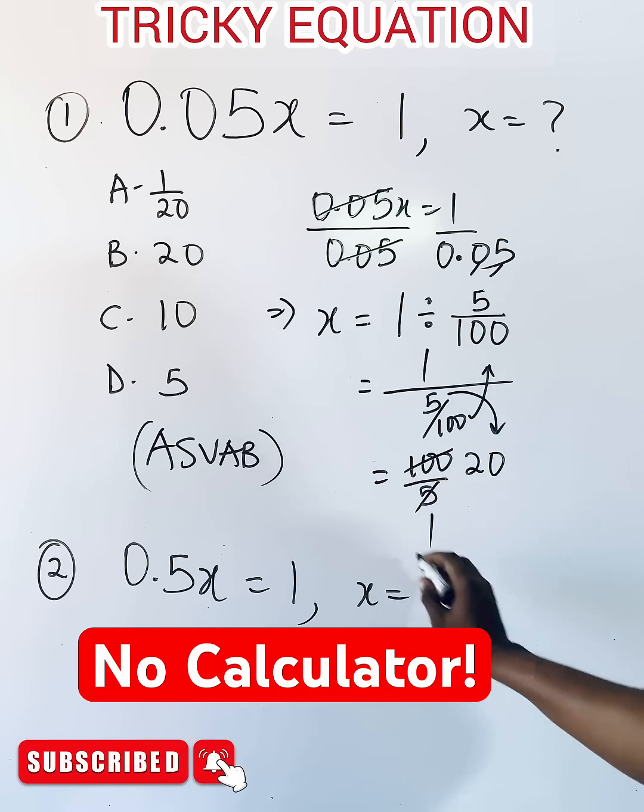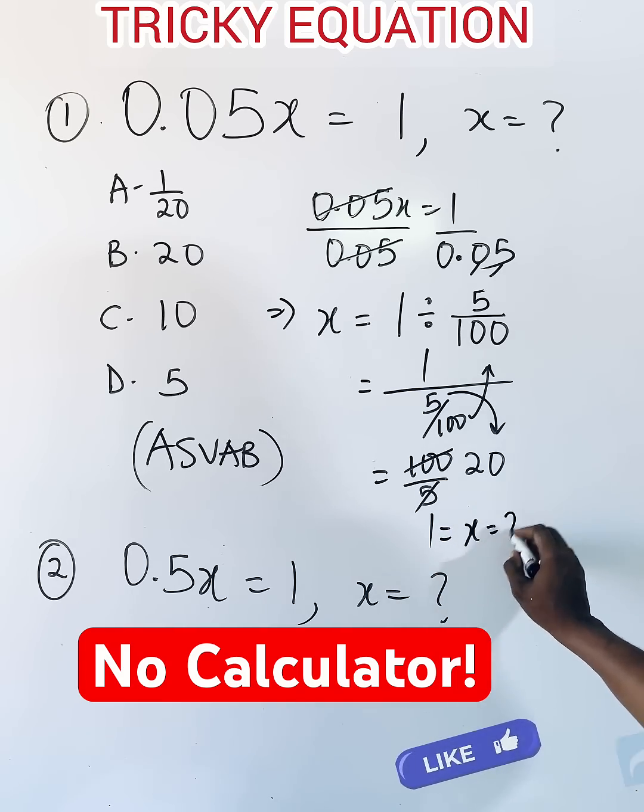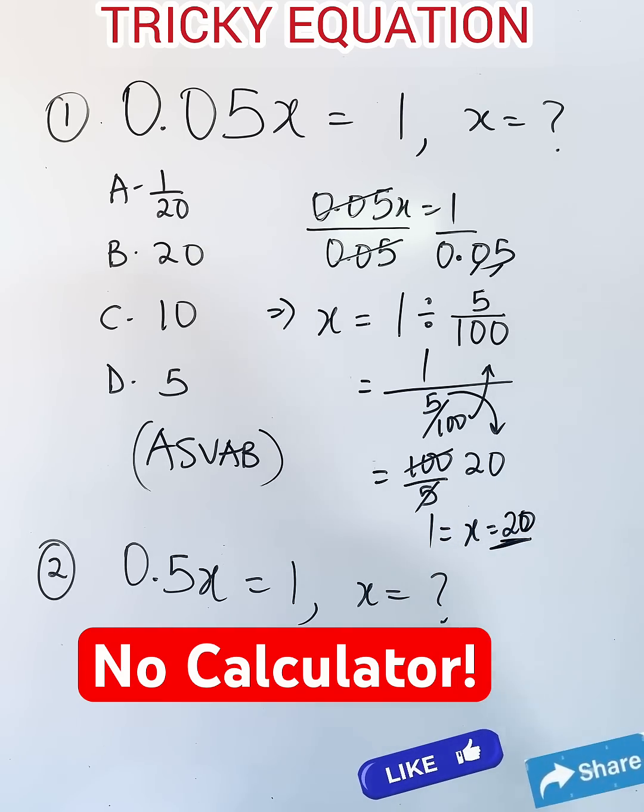So the value of x is equal to 20, and that is option B. What do you think about this?